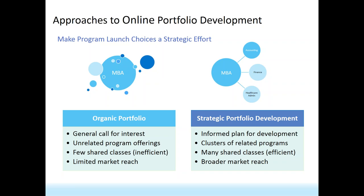On the other side is a more strategic approach to portfolio development, which we've coached our partners toward — having clusters of related programs, many shared classes, and ensuring broader market reach. With the organic approach, an unrelated mix of programs leads to missed opportunities: potential students may not find the right program fit, there's inefficiency from few shared classes, and programs sometimes fail before reaching their full potential. With a strategic approach, organizing programs in an organized way yields much more efficiency. A modular approach to program design lets you tap into a broader market, strengthening offerings and resulting in more students.